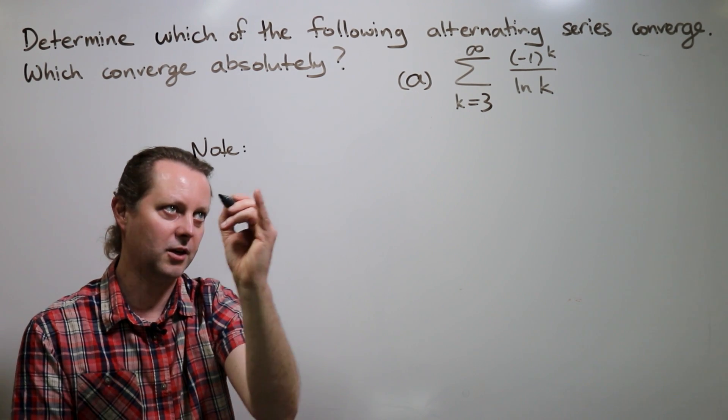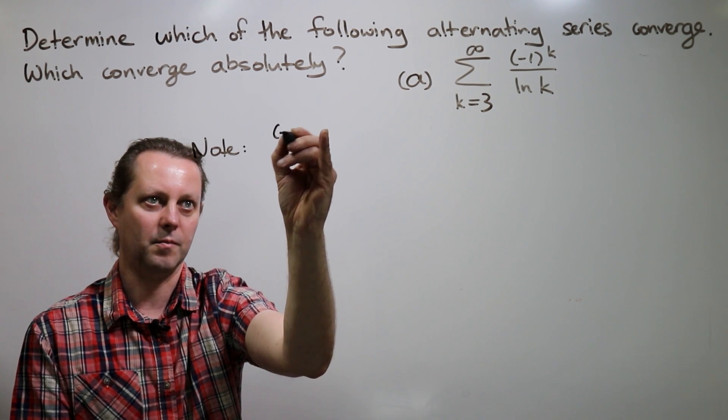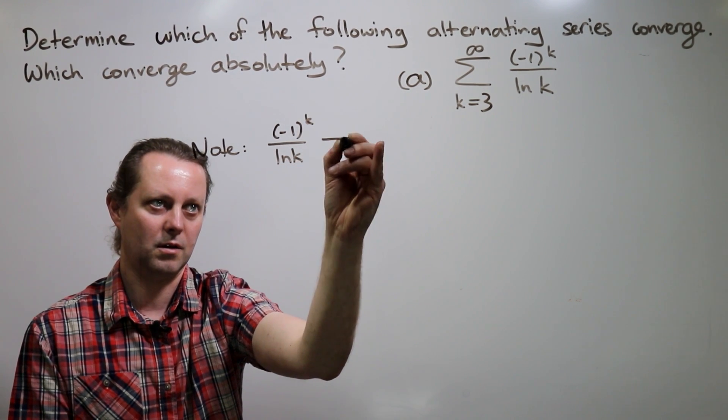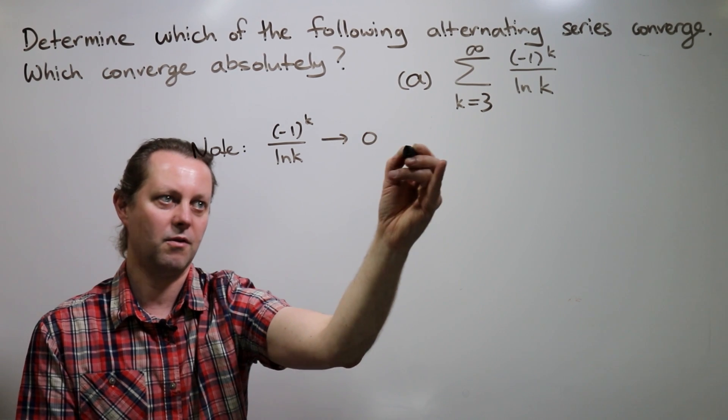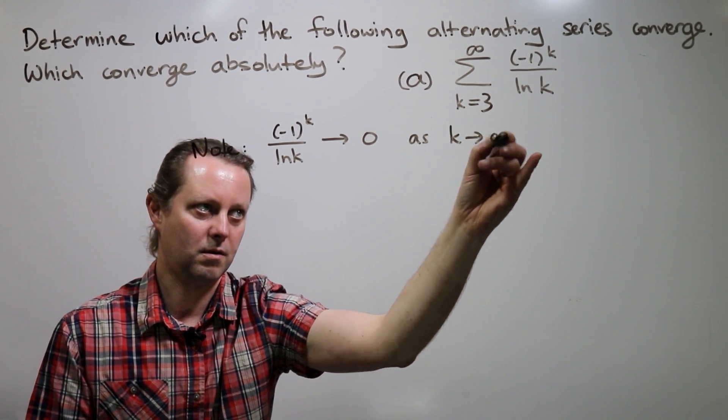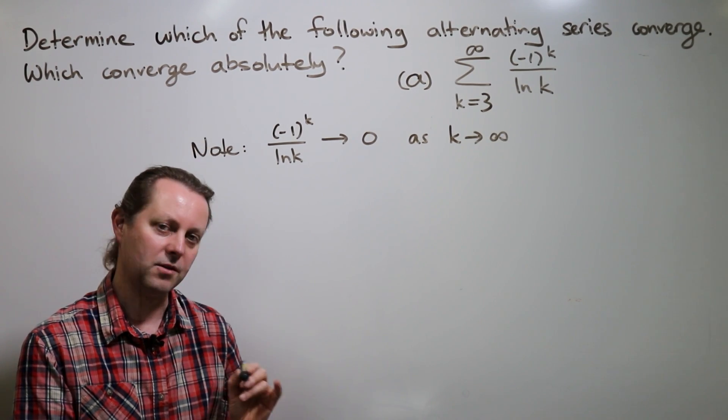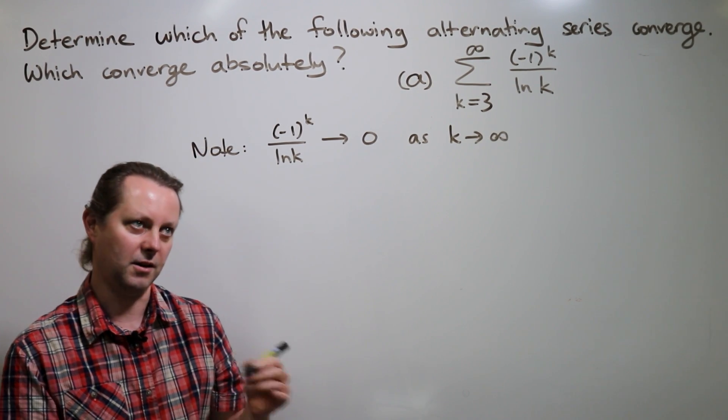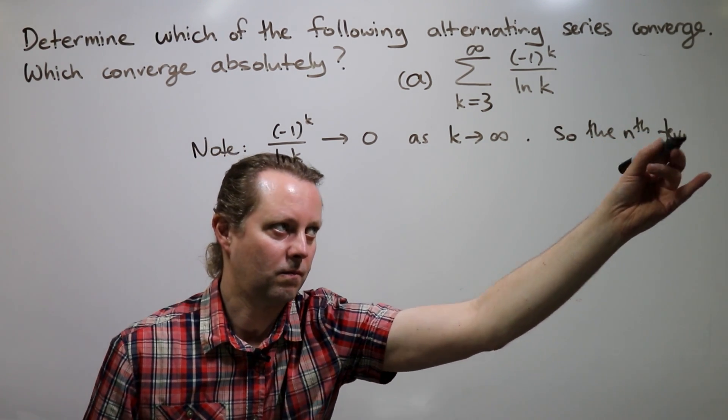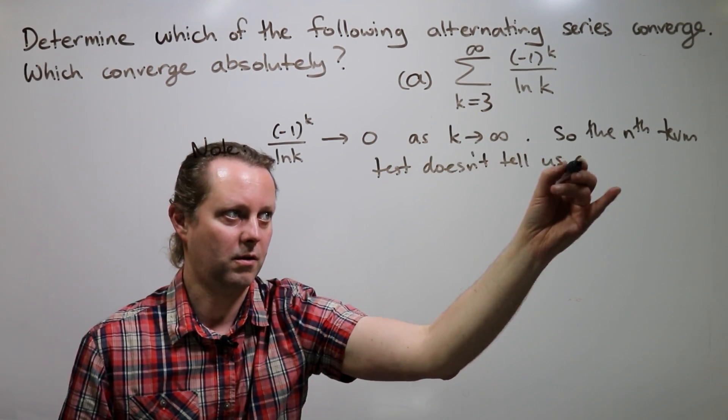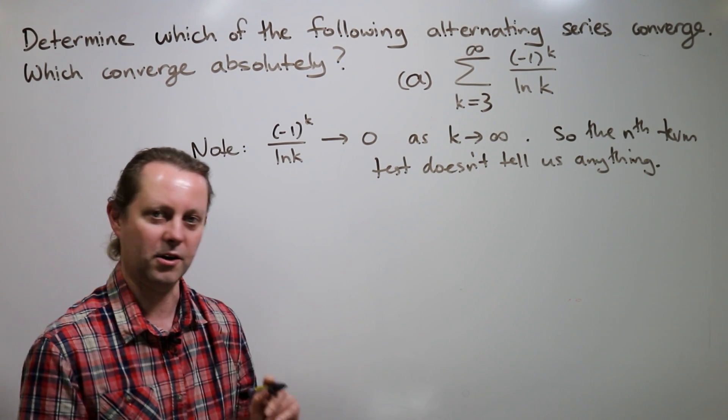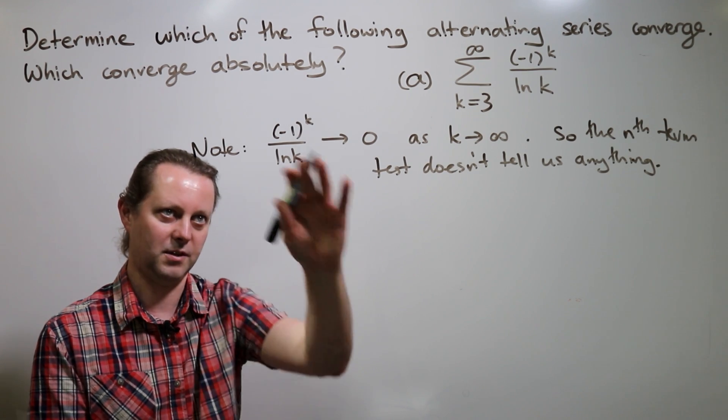So as k goes to infinity, the terms in this series do in fact go to zero. So the nth term test isn't going to tell us anything. It's not telling us it diverges. And the nth term test not telling us anything is a good thing. It can only tell us that it diverges if this didn't go to zero.